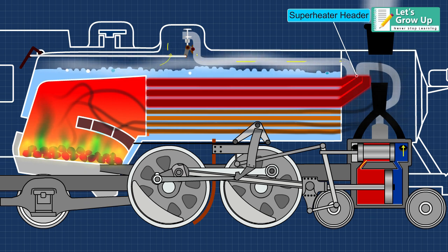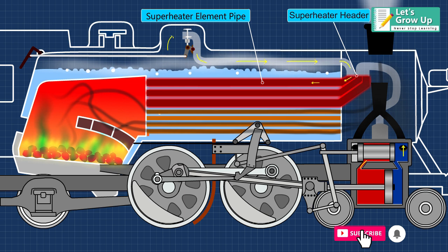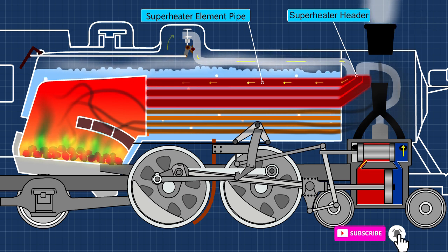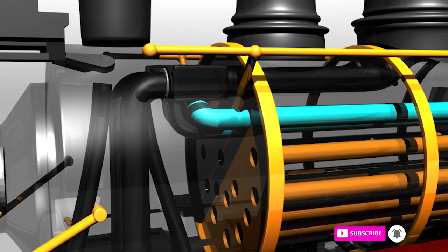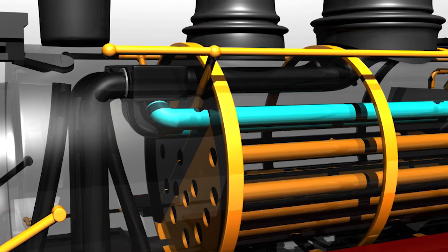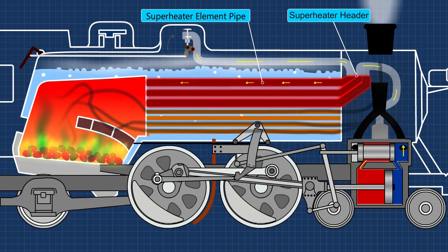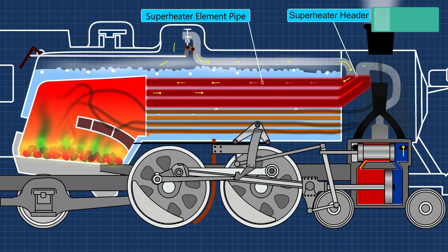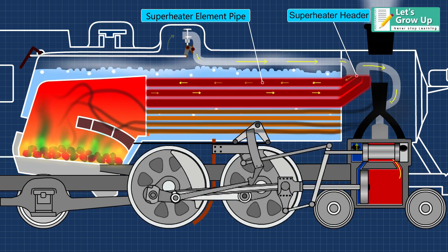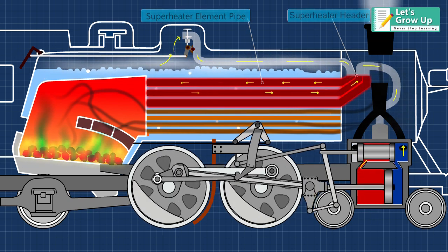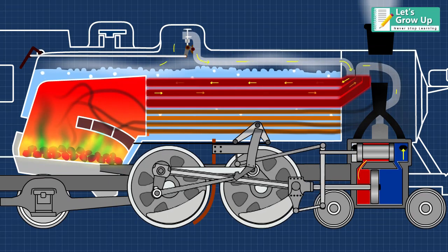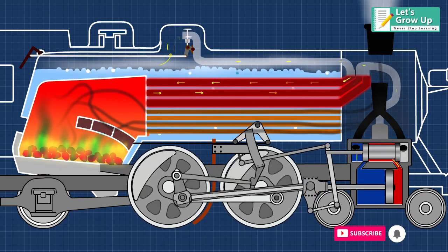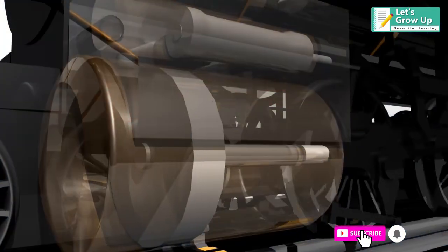After that, the steam passes through the superheater element pipes where it is heated further and converted into superheated steam. This very hot steam passes through the steam pipes into the cylinder, where the steam applies pressure to the pistons, which in turn moves the wheels of the locomotive.